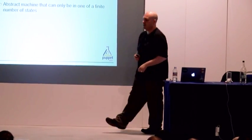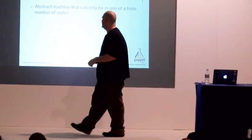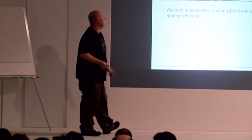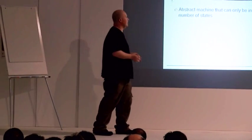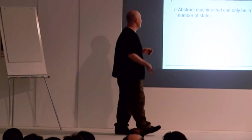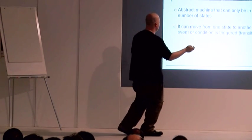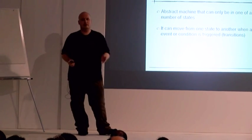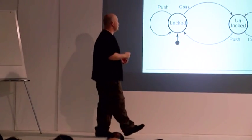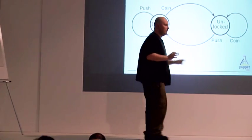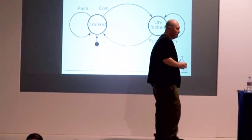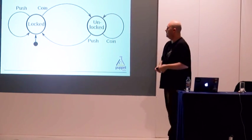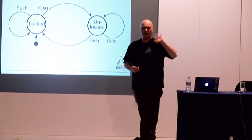It's going to make this a bit easier as well. A finite state machine has two elements that are important for us to discuss. First of all, what is it? A finite state machine is an abstract machine that can only be in one of a finite number of states. We can move from one state in this machine to another when an event or a condition is triggered. Just a quick example for those of you not familiar with finite state machines - this would be an example of a turnstile at a bus stop.